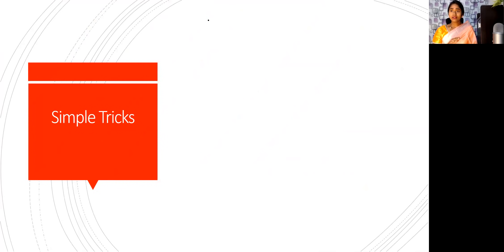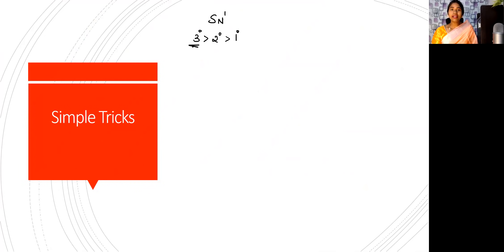See trick number one. Here, no mechanism is needed — I am going to teach you without any mechanism. SN1 reactivity order is tertiary greater than secondary greater than primary. If any alcohol is there and it is tertiary, then it involves SN1. If any primary alcohol is there, it does not involve SN1 — no SN1.